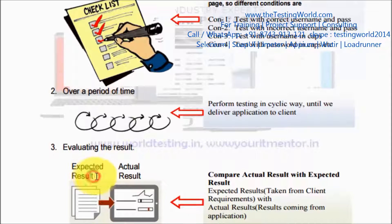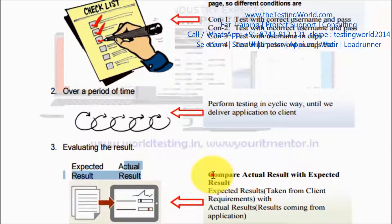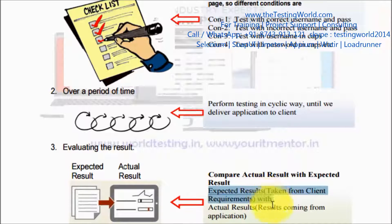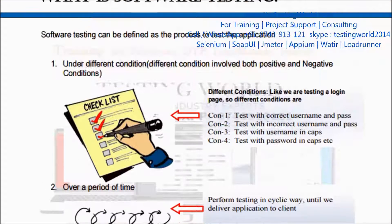This introduces the concept of expected result. Whenever we test any application, we get some expected results — these are picked from the client requirements, describing how the application should behave. When testing, the result we get from the application is called the actual result. We compare actual result with expected result: if they match it is passed, else it is failed.